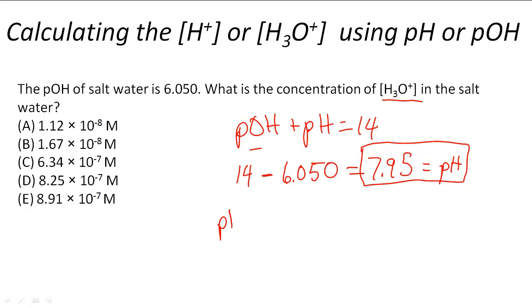So we know that pH equals the negative log of the concentration of H plus, or in this case, H3O plus.